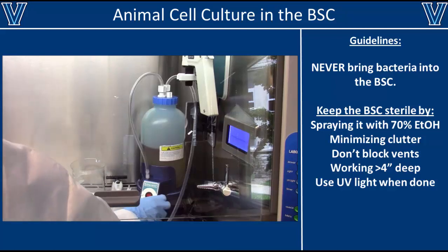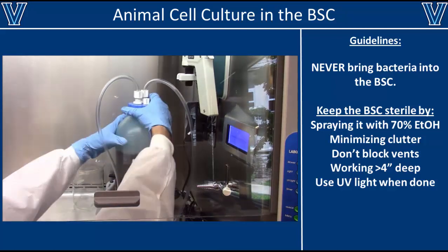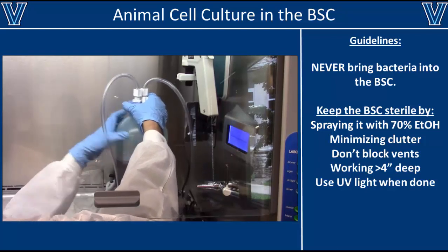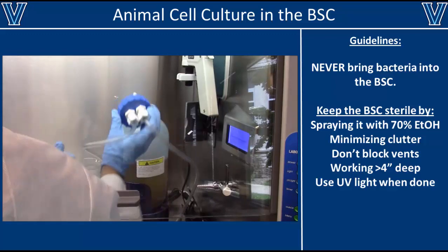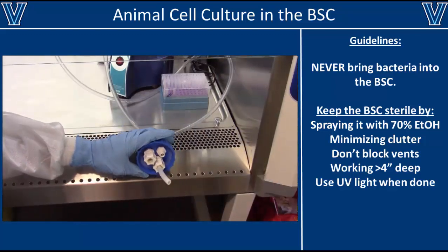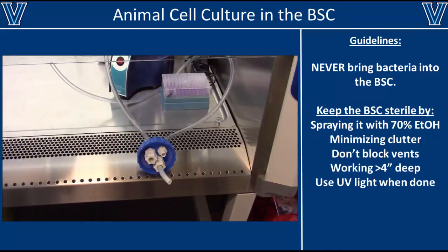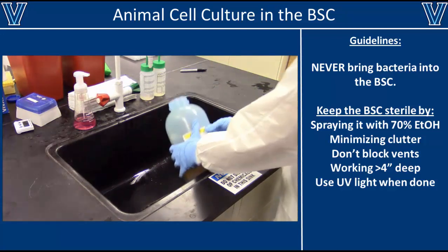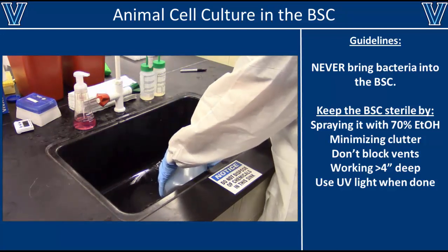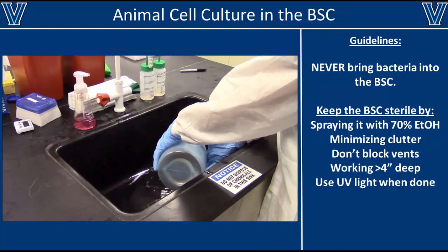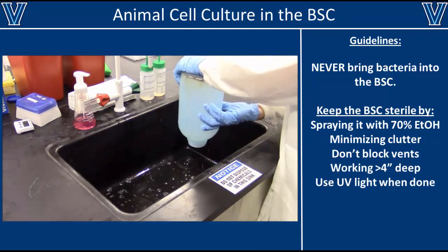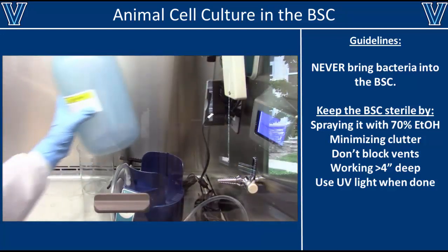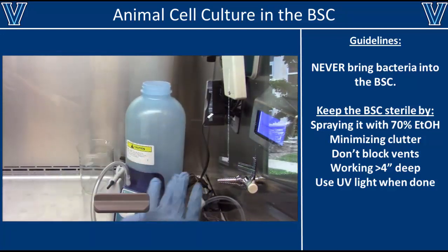Keep a close eye on the aspirator tank and empty it out whenever it's 50 to 75% full. It is very important that you not let it overflow since overflow could damage the aspirator pump. Begin by loosening the lid on the aspirator tank and placing it outside of the BSC since it's probably contaminated. Next, remove the tank from the BSC and pour it down the drain — the aspirator tank is kept sterile with bleach, so its contents should be completely sterile. Then put the aspirator tank back into the BSC and replace the cap.